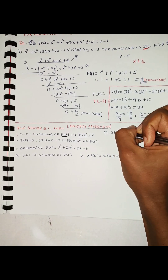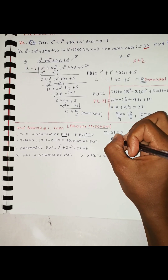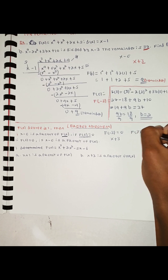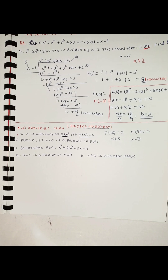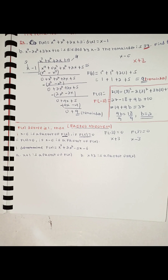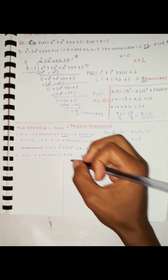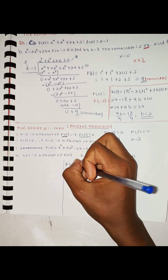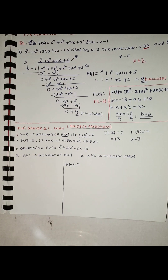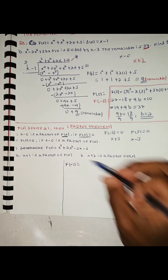For example, f of minus 3 equals 0 means x plus 3 is a factor. f of 3 equals 0 means x minus 3 is a factor. For x plus 1: c is minus 1, so we check f of minus 1. x plus 1 is the factor, and we check if f of minus 1 equals 0.